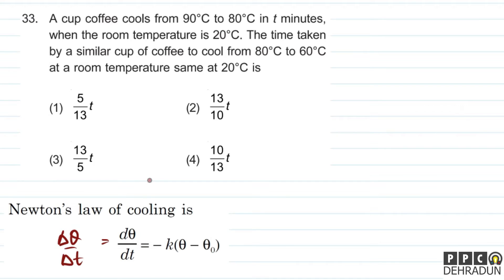Now let's see what's happening in the first case. What is delta theta? From 90 degrees to 80 degrees. So delta theta came out to be minus 10 degrees Celsius. So minus 10 upon time taken, which is 10 minutes.